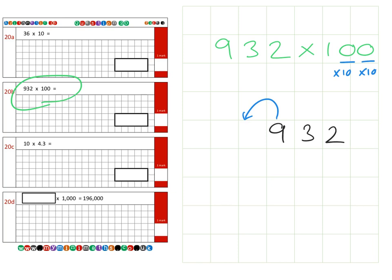We're going to multiply by the first 10, that's one column, and we're going to multiply it by another 10. So all together that's multiplying by 100, and we're going to take the 9 into the ten thousands column here. And again, that 932 must stay together.